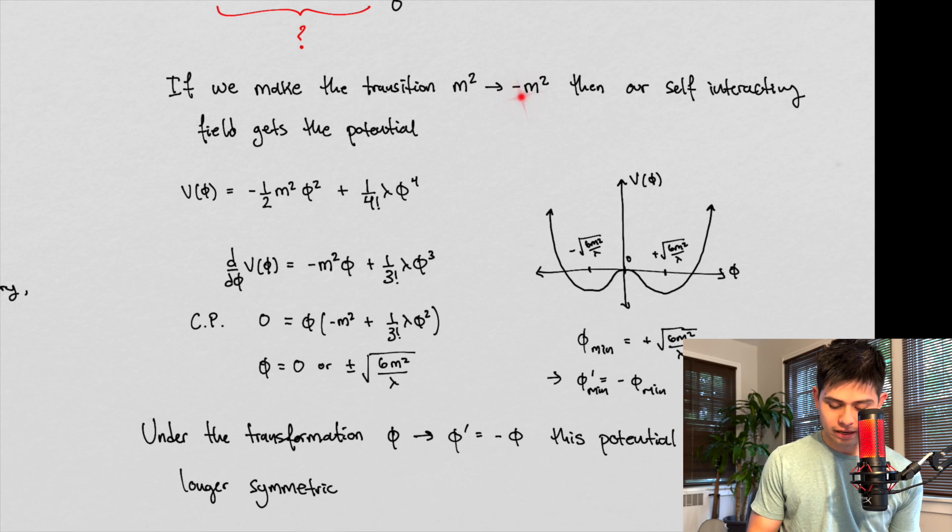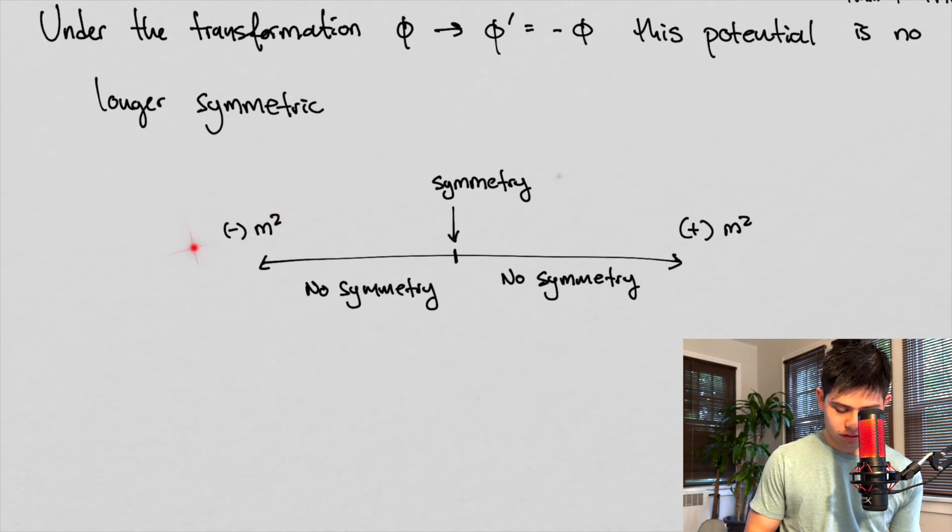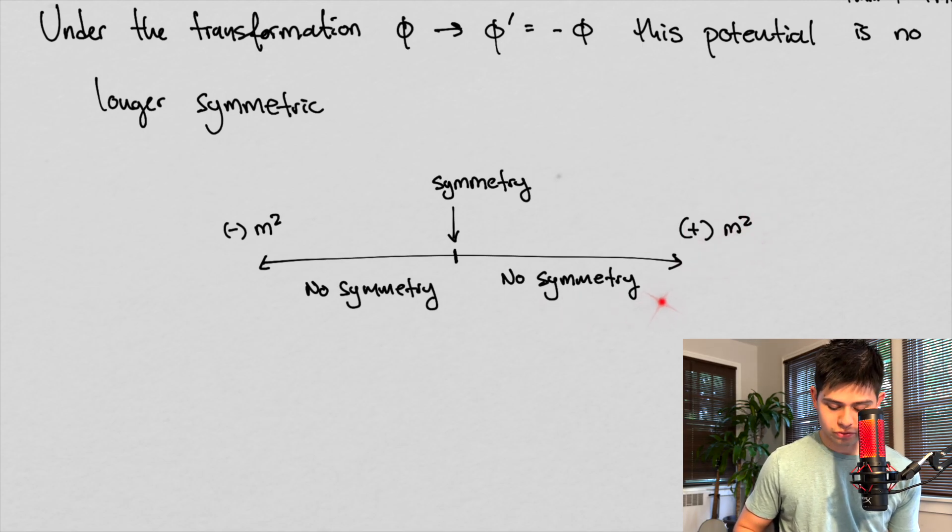So by virtue of going from negative to negative m squared, we lose symmetry. Right? Because our phi mins are not conserved. So we lose symmetry. So this means, if we go for, on the spectrum that we have here, positive mass, we said there was no symmetry.